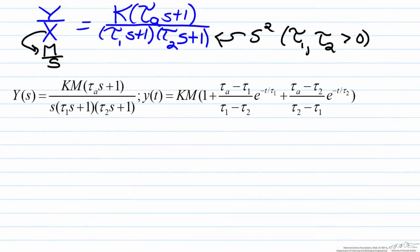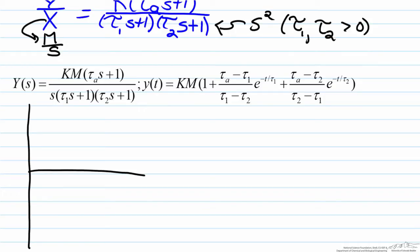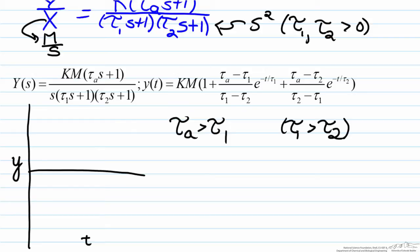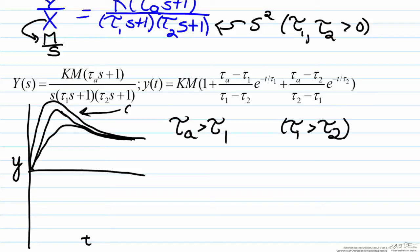Now we will make a few sketches of this response. The first case is where tau a is greater than tau one, and we assume tau one is greater than tau two in all cases. On axes of time vs. output magnitude, when tau a is greater than tau one, the response exhibits overshoot — it goes higher than the new steady state Km, then settles down. It never goes below the steady state once it overshoots, making this a non-oscillatory system.